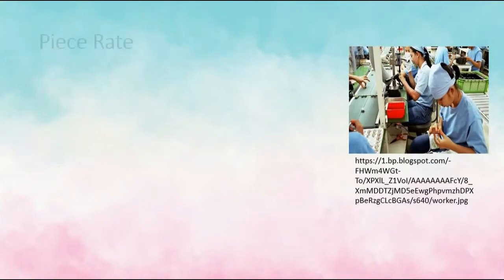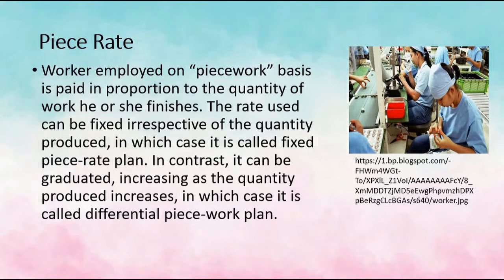Piece Rate: A worker employed on piece work basis is paid in proportion to the quantity of work he or she finishes. The rate used can be fixed irrespective of the quantity produced, in which case it is called fixed piece rate plan. In contrast, it can be graduated, increasing as the quantity produced increases, in which case it is called differential piece work plan.